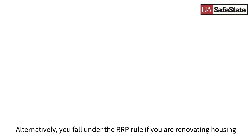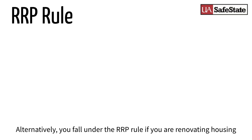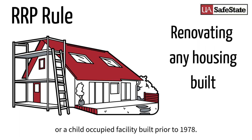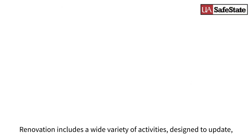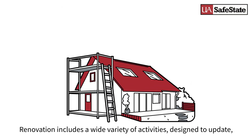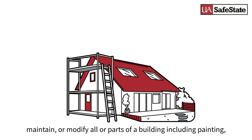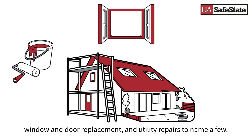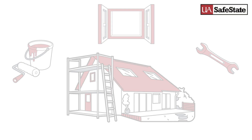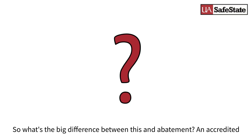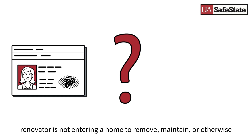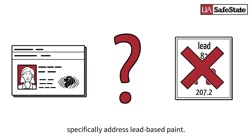Alternatively, you fall under the RRP rule if you are renovating housing or a child-occupied facility built before 1978. Renovation includes a wide variety of activities designed to update, maintain, or modify all or parts of a building, including painting, window and door replacement, and utility repairs, to name a few. An accredited renovator is not entering a home to remove, maintain, or otherwise specifically address lead-based paint.